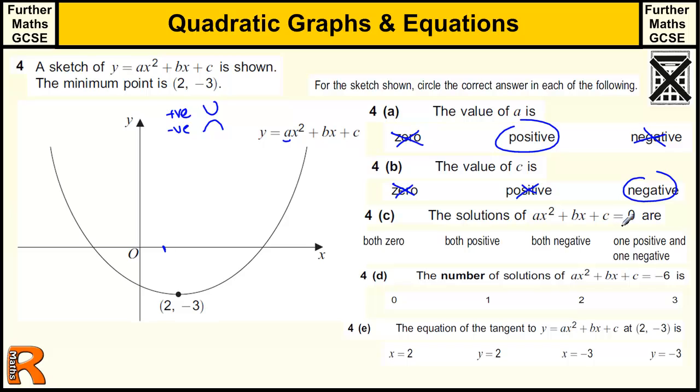Okay, the solutions of this equation are, are they both zero and all these sort of things? Well, if this is correctly sketched, then the solutions where it equals zero are where these two curves cross the x-axis. So this one crosses positive, this one crosses negative. So that's that one.